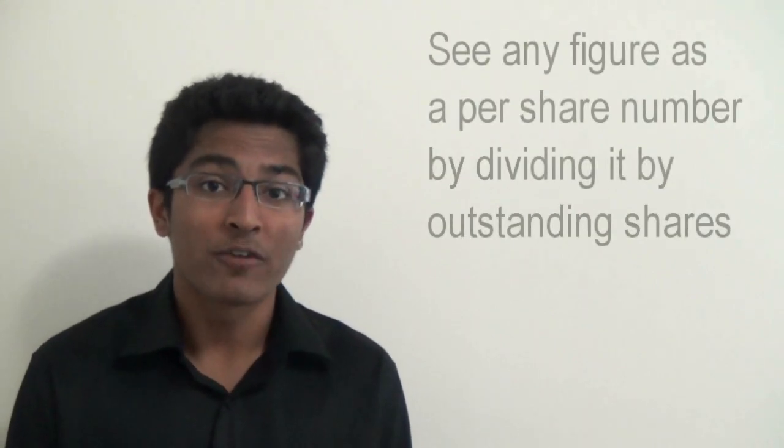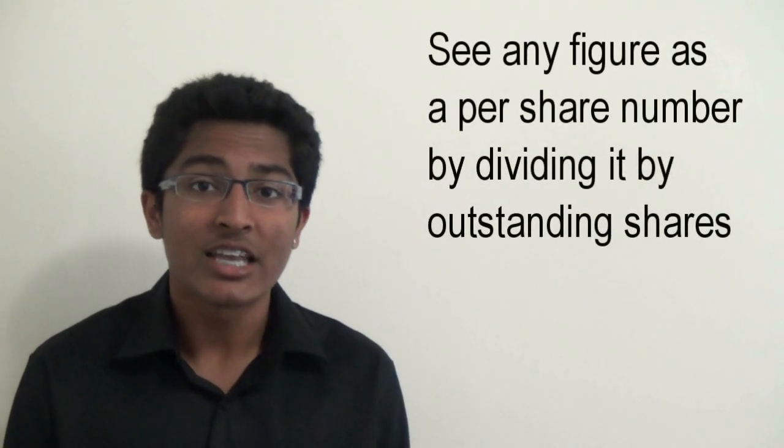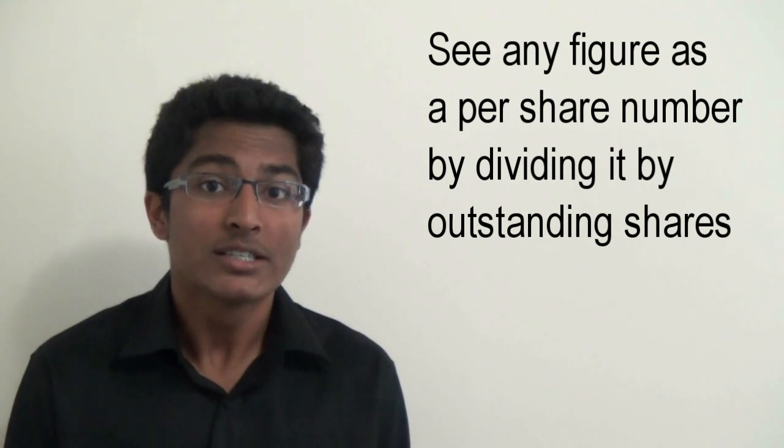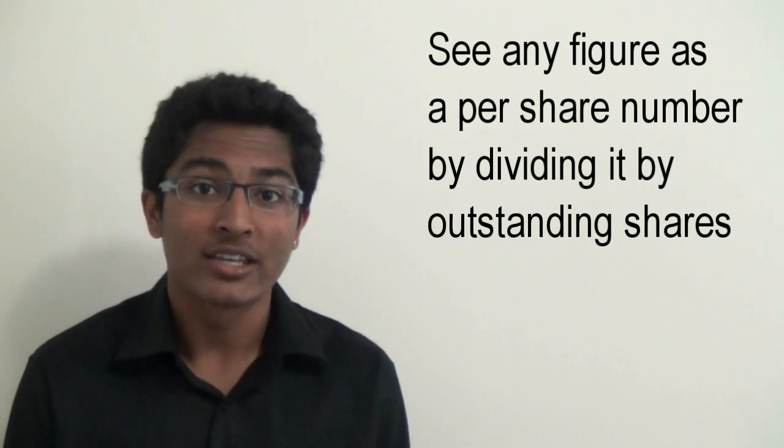You can take any number on a financial statement and see it as a per share number simply by dividing it by outstanding shares.